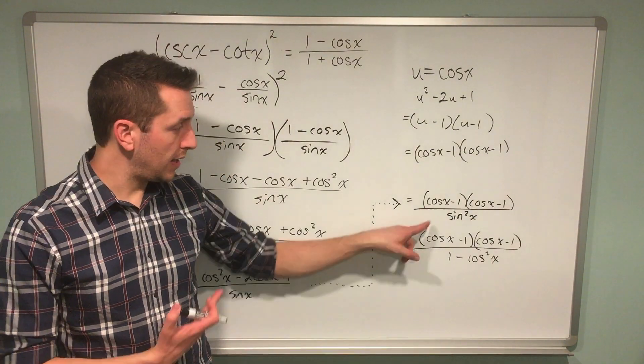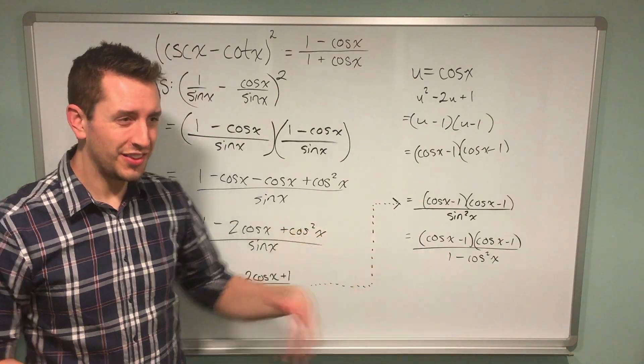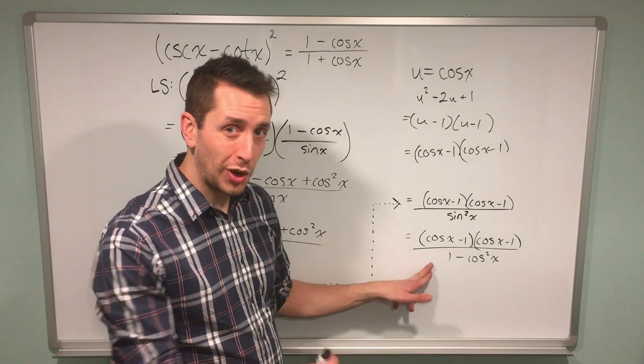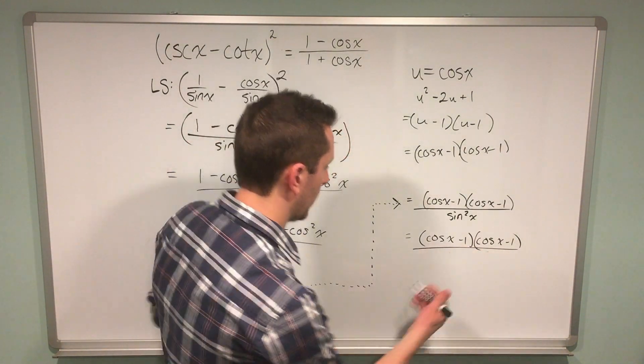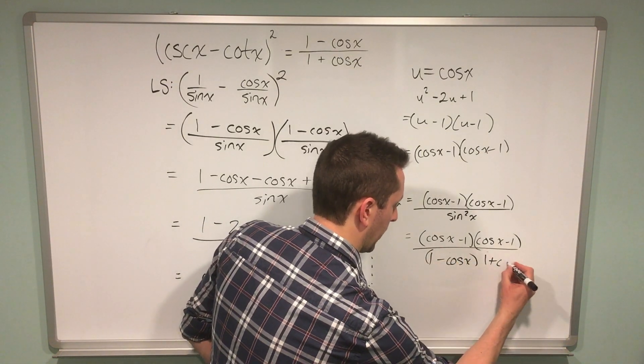I can fix that by applying the Pythagorean identity to change sin squared x into 1 minus cos squared x. This is probably an identity you've worked with before. Recall that 1 minus cos squared x can be factored using difference of squares factoring, resulting in 1 minus cos x times 1 plus cos x.